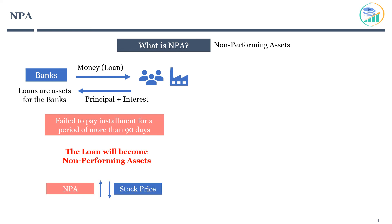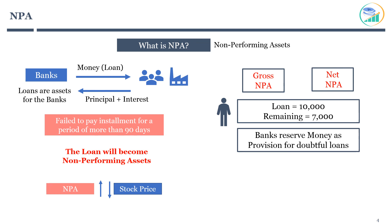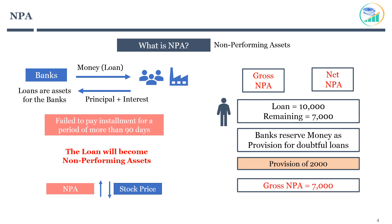This means that as NPA goes up, stock price goes down. Now let's review two key terms: gross NPA and net NPA. Consider an example where a person borrows 10,000 from a bank. Assume that after paying a few installments, he stops paying for more than 90 days, so the loan becomes a non-performing asset. The remaining balance is 7,000. Since banks know there is a higher probability that some loans will default, they reserve a certain quota of money as a provision for doubtful loans at the start of the financial year. Assuming the bank has a provision of 2,000 for this loan, the gross NPA will be 7,000, but the net NPA will be 5,000. As an investor, it's good to understand the bank's business model, NPA, and provisions before you delve into bank financial statements.